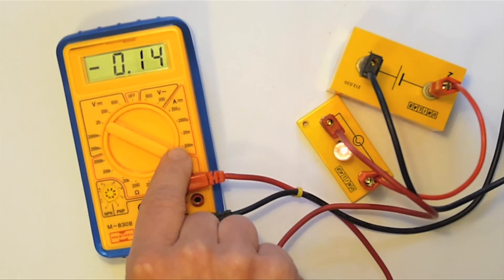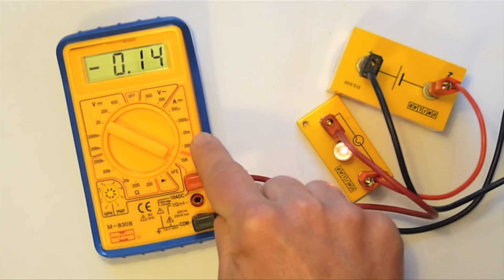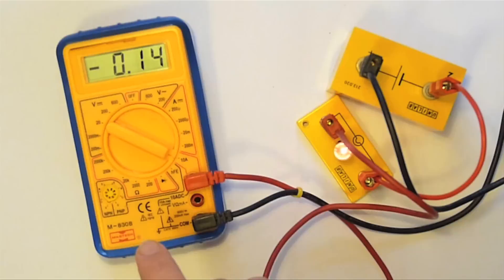Since this is below 200 milliamps I can measure it more precisely using one of the more sensitive ranges on the multimeter. In order to do this I need to move the red lead into this socket marked milliamps.